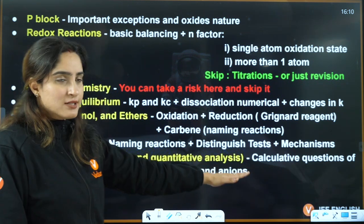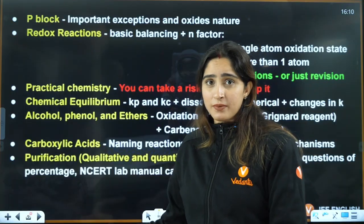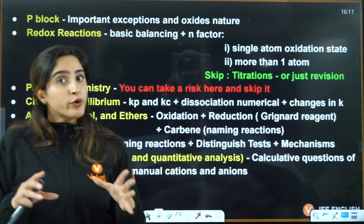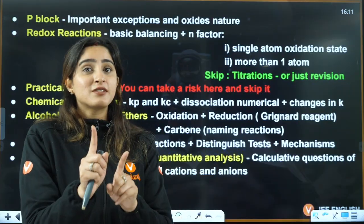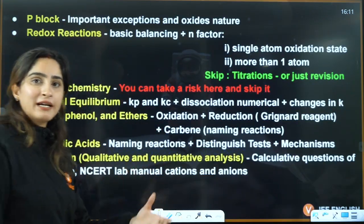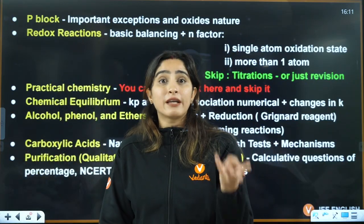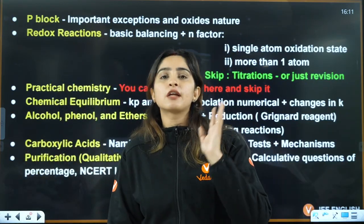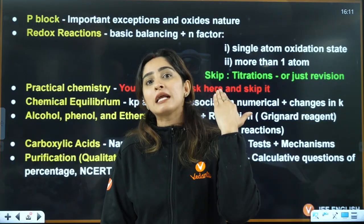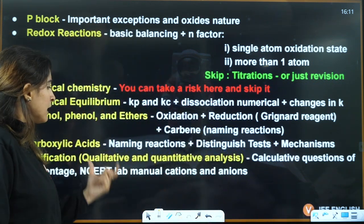For qualitative and quantitative analysis: students usually skip this, but in 2025 surprisingly good questions were asked. If you've done this chapter even once you'll be able to answer — questions relate to percentage calculation of nitrogen using Kjeldahl's method, Dumas' method, and Carius method. Do these three or four methods to calculate the percentage of a particular element in a compound.